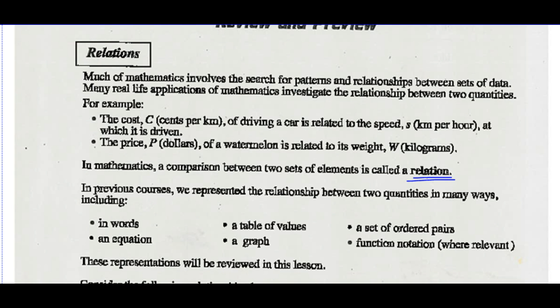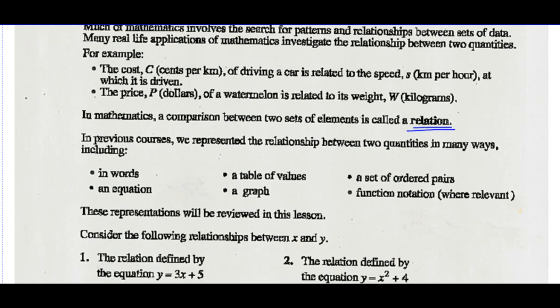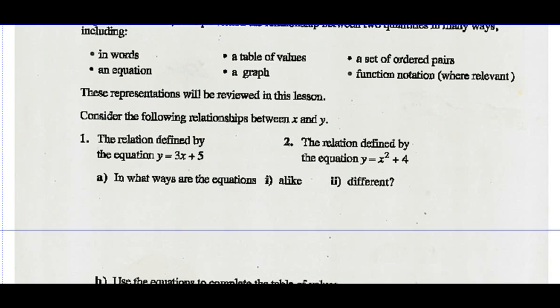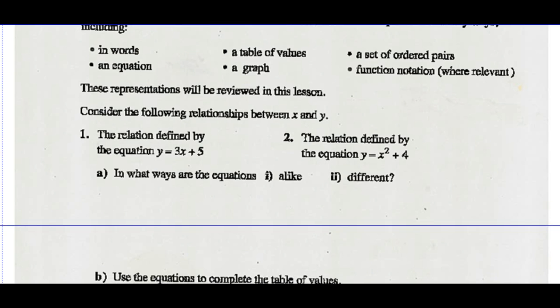In previous courses, we represented the relationship between two quantities in many different ways. We did it in words, we did it with an equation, a table of values, a graph, a set of ordered pairs, and function notation where it was relevant. These representations will be reviewed in this lesson.